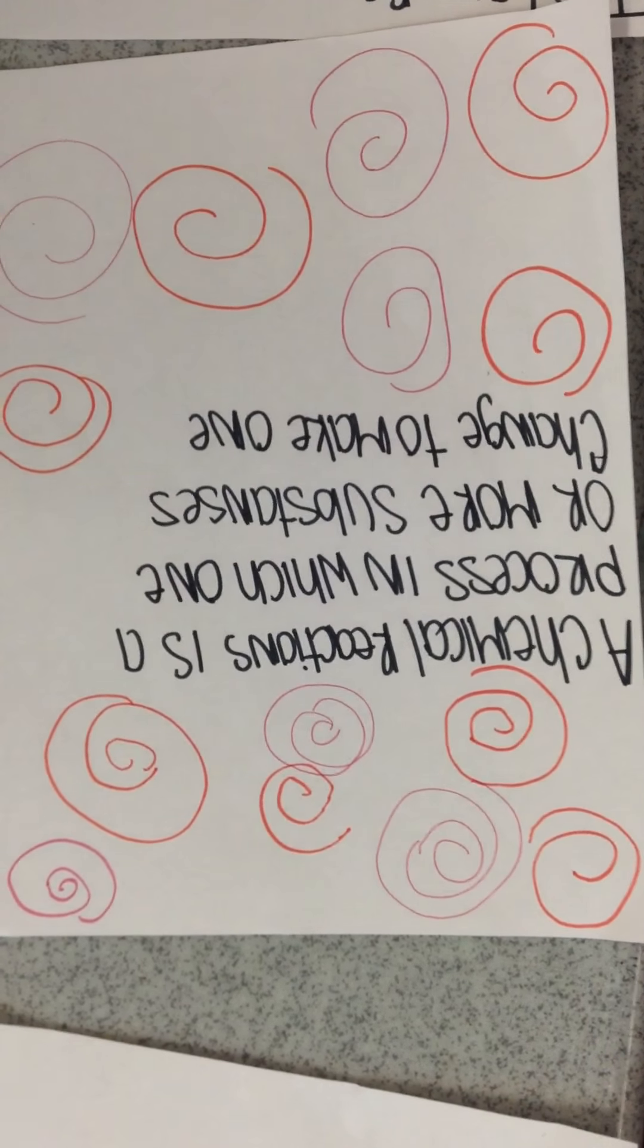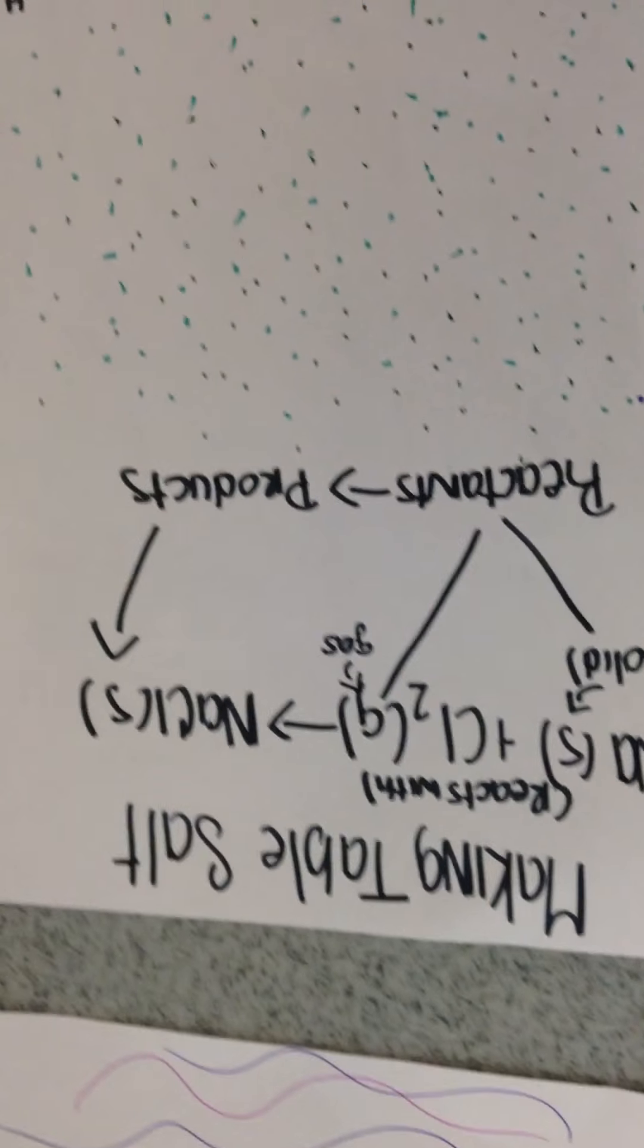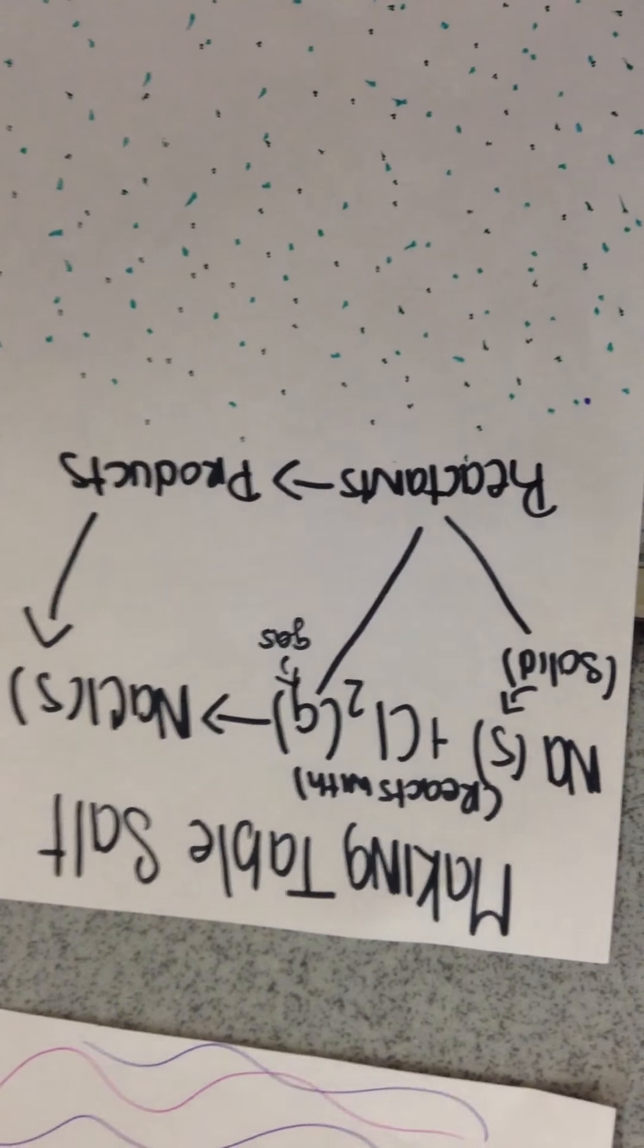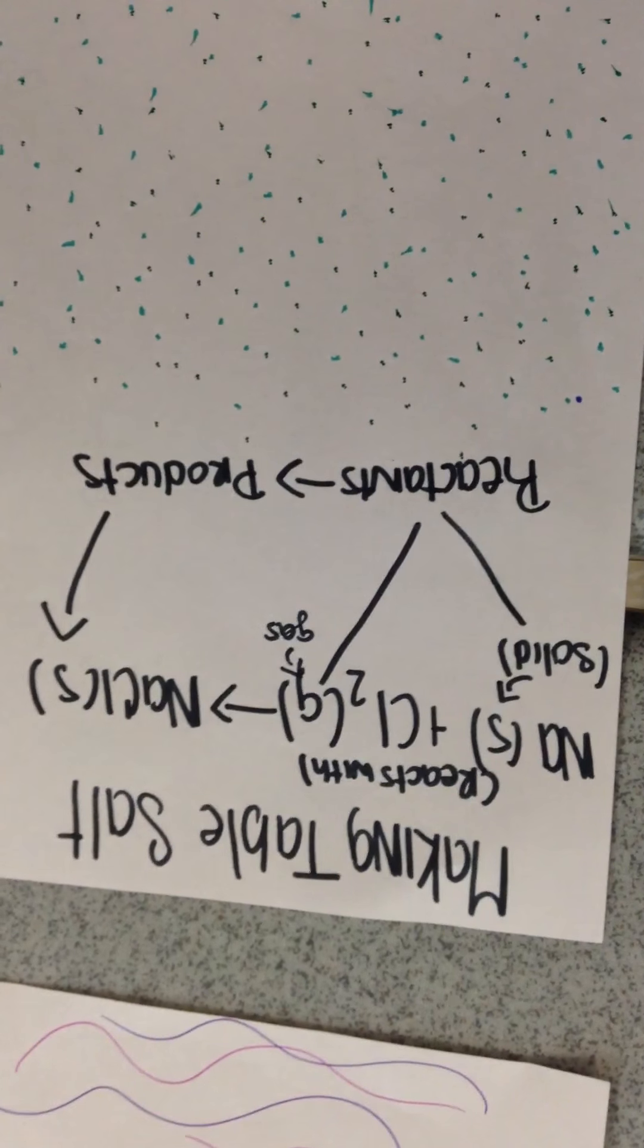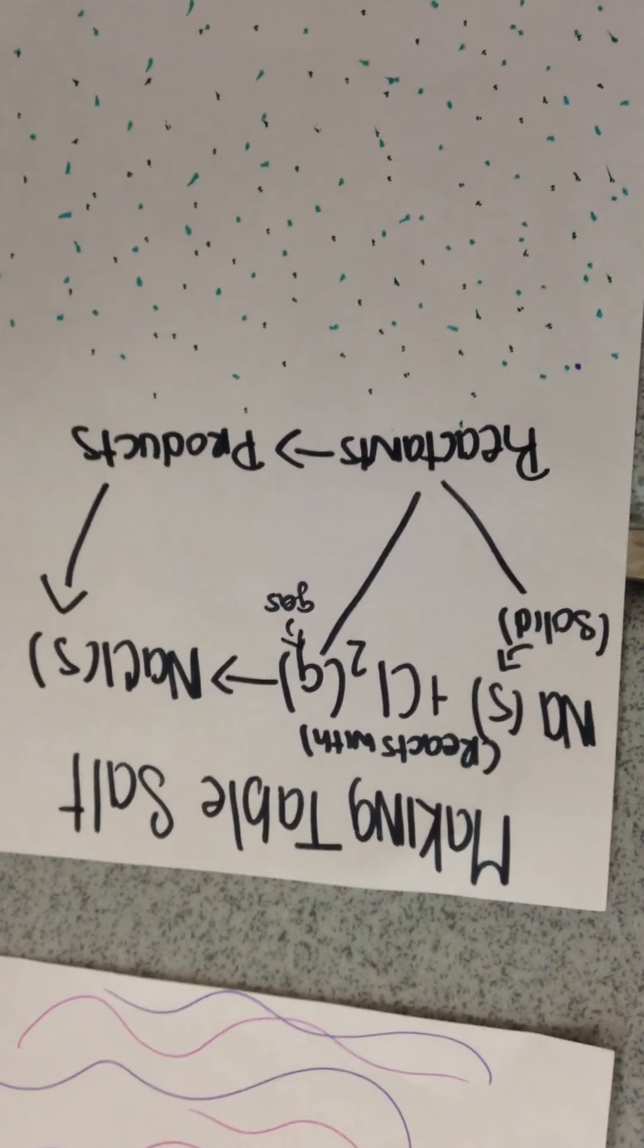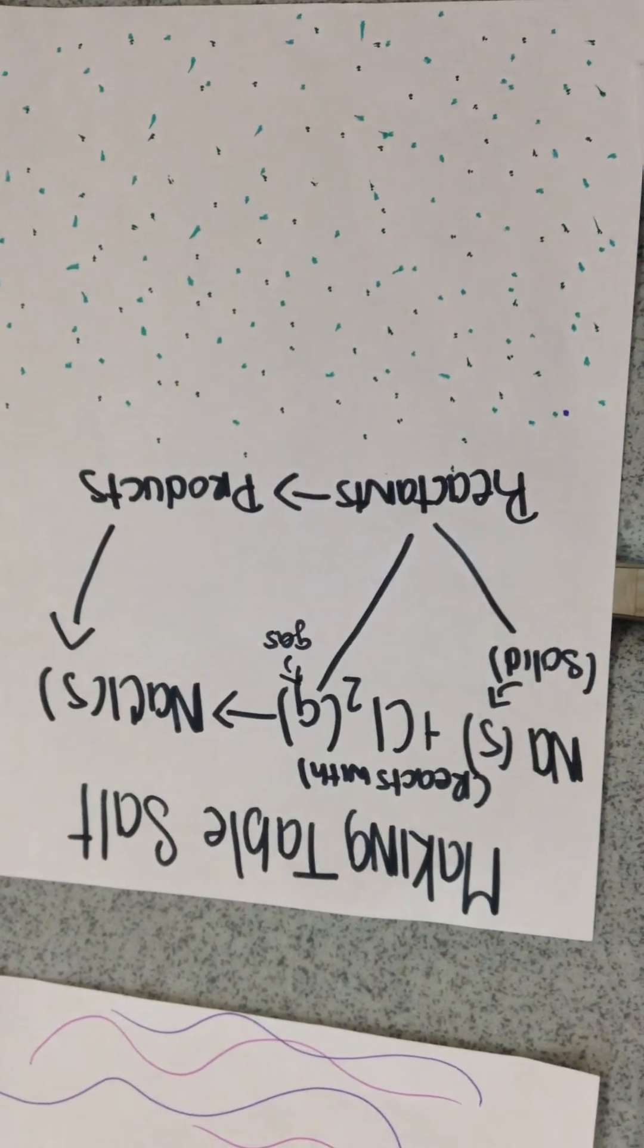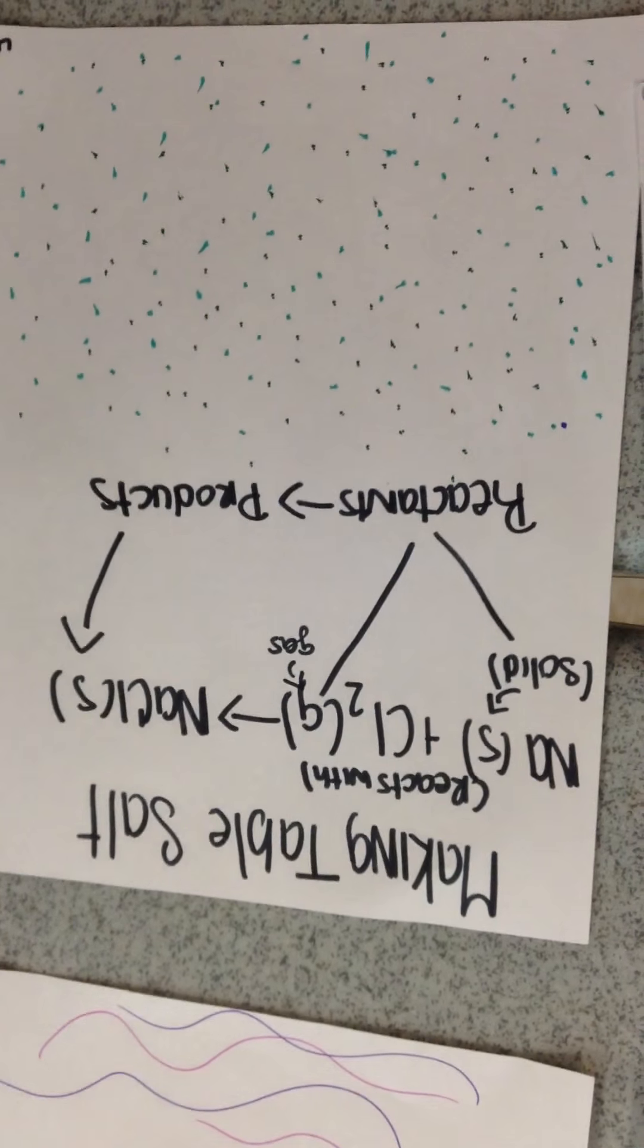A chemical reaction is a process in which one or more substances change to make one or more new substances. Making table salt: Na plus Cl2 reacts to make NaCl. Reactions produce products.